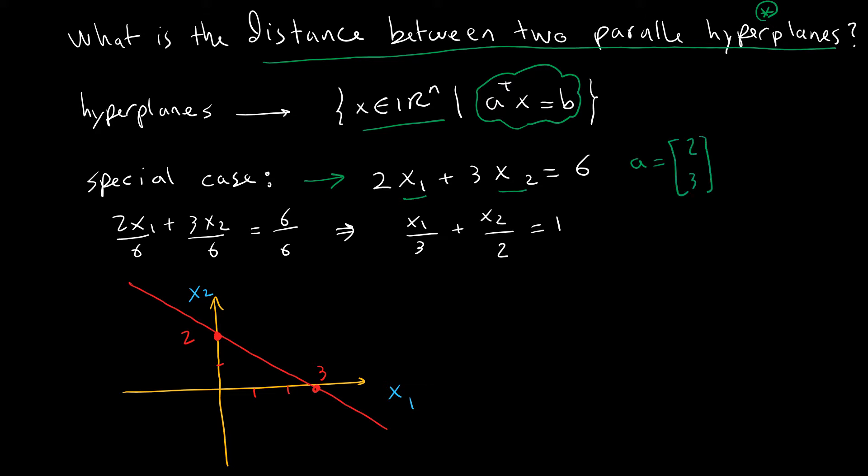Then we have a^T x with x = [x1, x2]. So if we transpose a, we get [2, 3] times [x1, x2], and that is exactly what we have here: 2x1 + 3x2 = 6, where b in our case is 6.